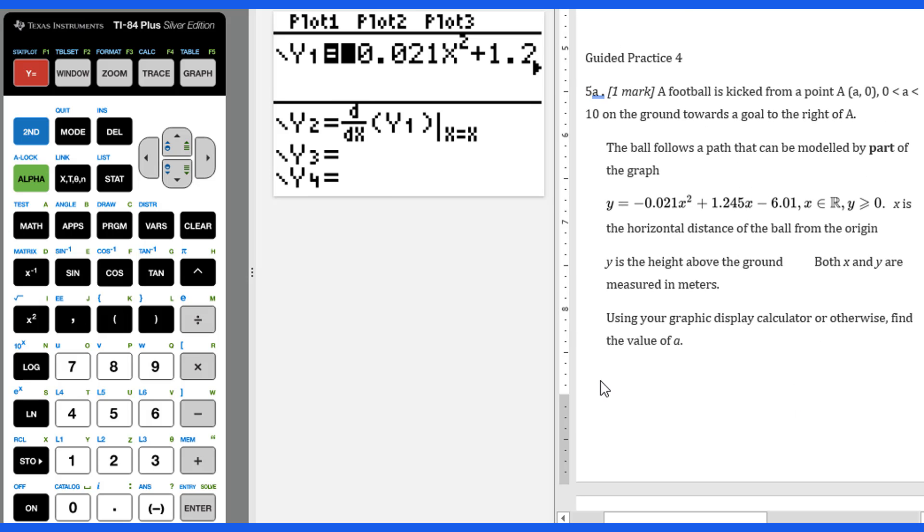Let's go to Guided Practice 5a. A football is kicked from a point A (a, 0), where a is between 0 to 10, on the ground towards a goal to the right of A. The ball follows a path that can be modeled by part of the graph y equals this quadratic function, y greater than or equal to 0. x is the horizontal distance of the ball from the origin, y is the height above the ground. Both x and y are measured in meters. Using your graphic display calculator or otherwise, find the value of a.